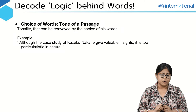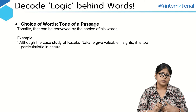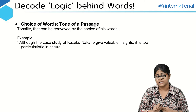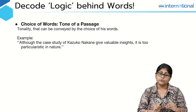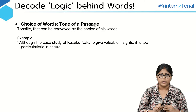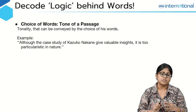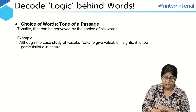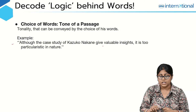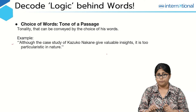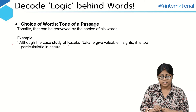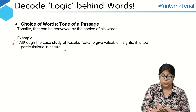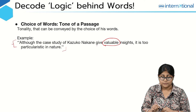Another very important aspect is: what kind of words is the author using when writing a given RC passage? The choice of words highlights the author's opinion, point of view, and attitude on whatever topic they are writing about. For example: 'Although the case study of Kazuko Nakane gives valuable insights, it is too particularistic in nature.' Consider that this is a statement taken from a reading comprehension passage.